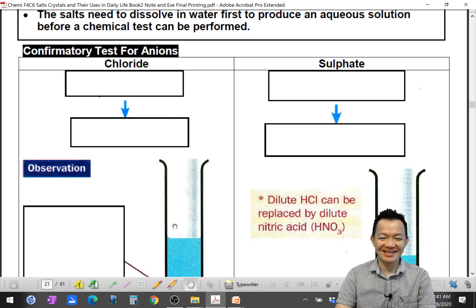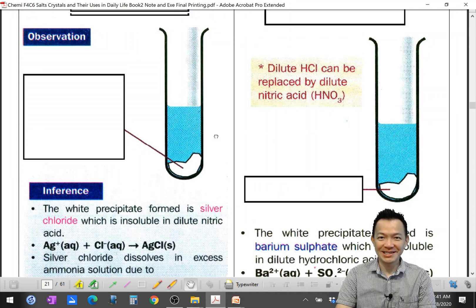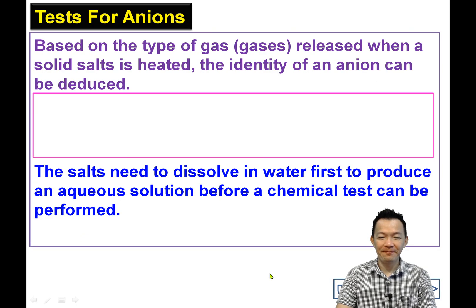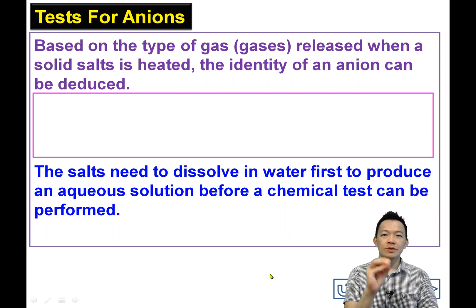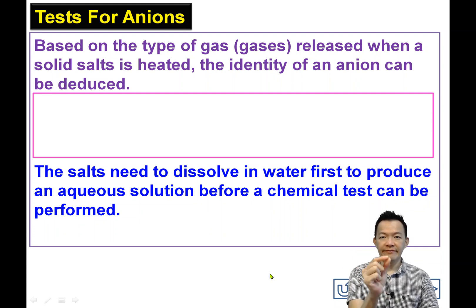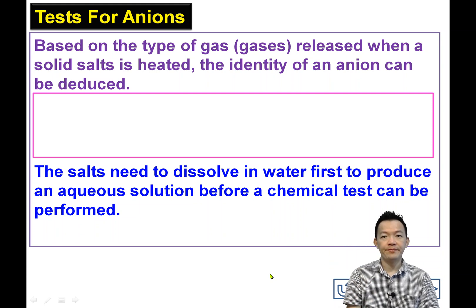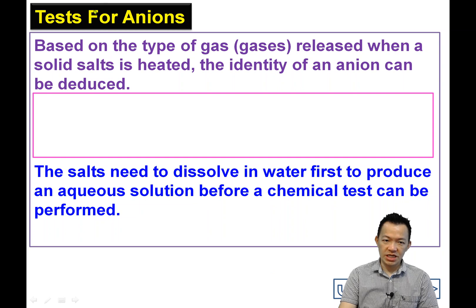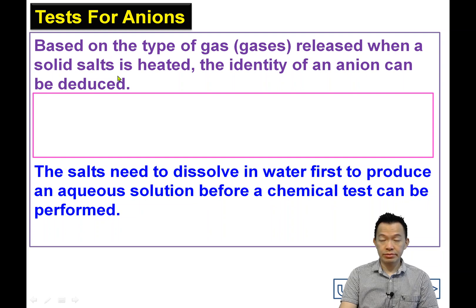Page number 21. Okay, continuing — if you want to know about the anion of the salt, you heat the salt and from the gas produced, you know the anion. But the problem is: based on the thought, the gas produced when the solid salt is heated — the identity of the anion can be deduced, right?